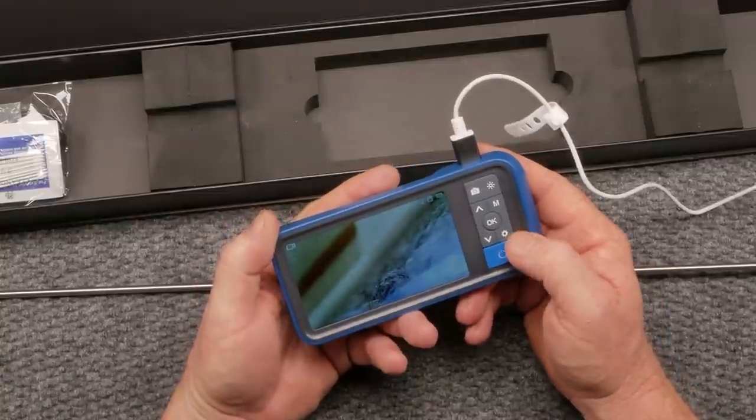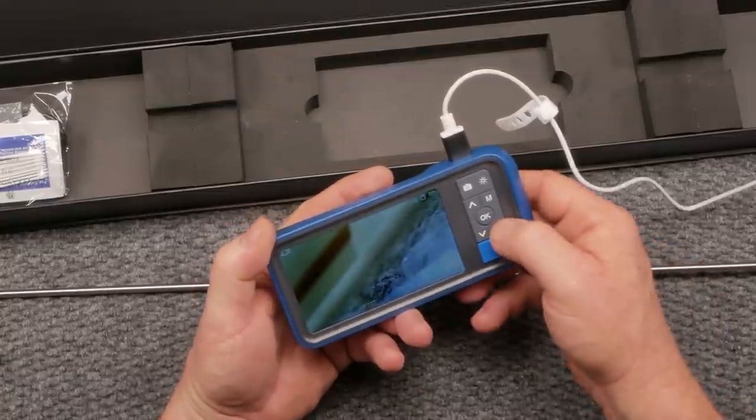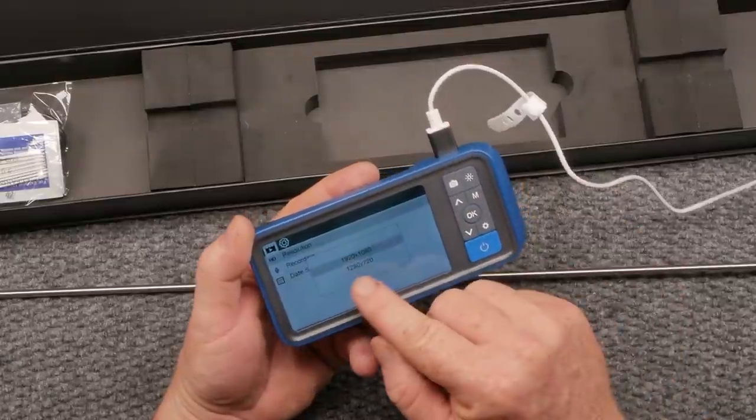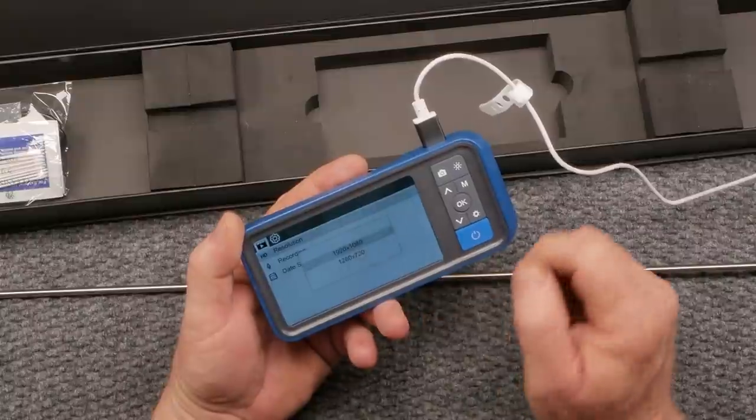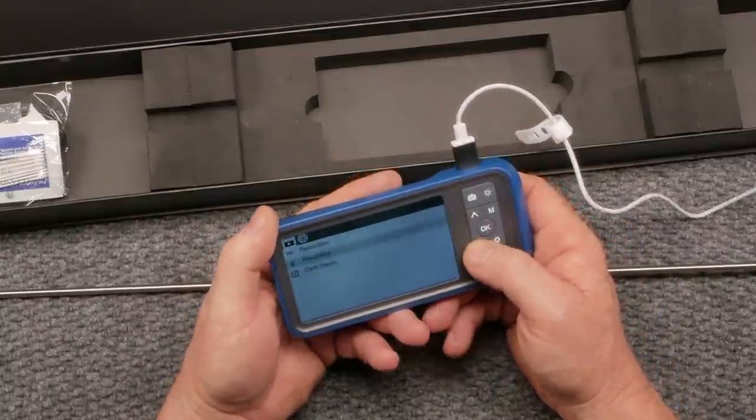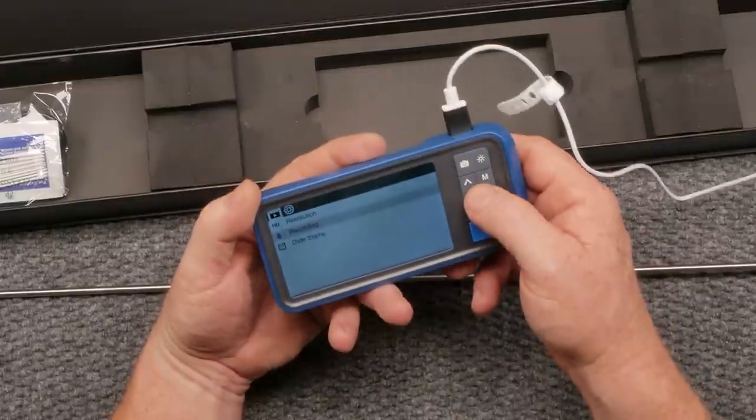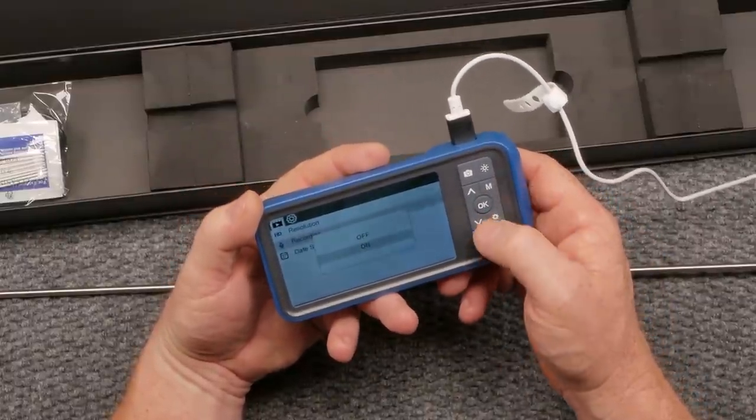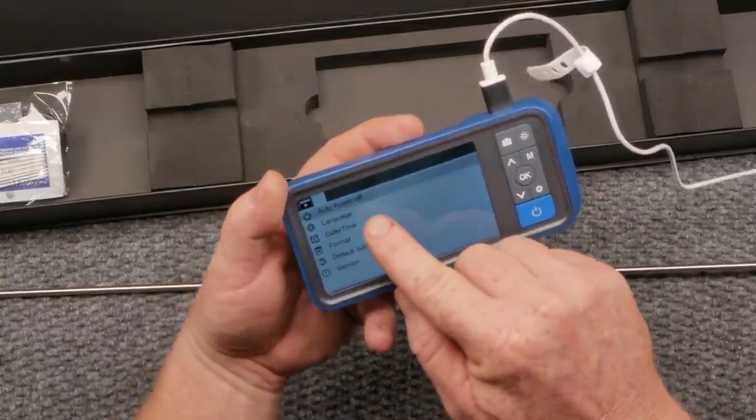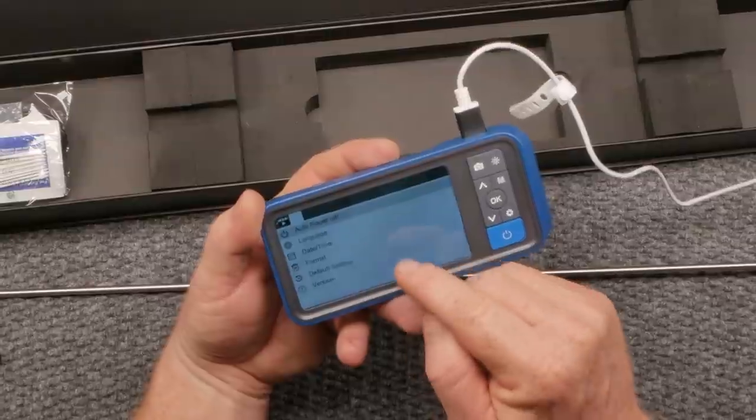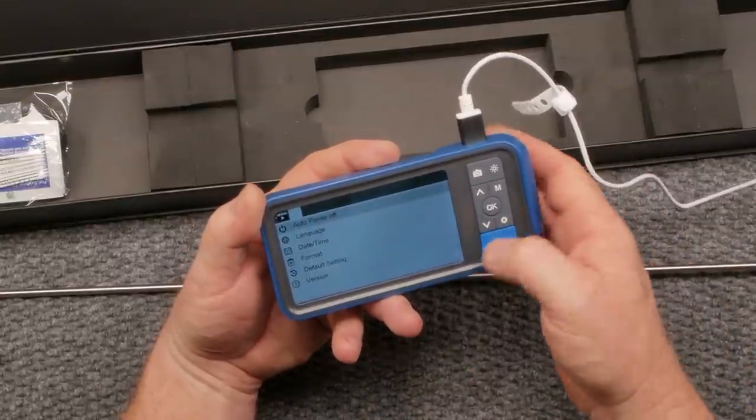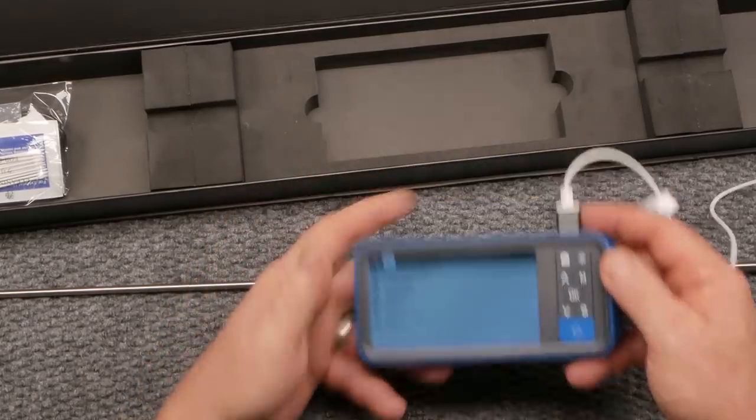Now what we do is we're going to take a look at the controls button right here. You can go different resolutions. We can click on that. You can go 1920 by 1080 or 1280 by 720. We're going to keep it at 1280. We can elect to go ahead and do the recording sound on or off. We're going to go ahead and leave that on date stamp. You can hit this again. We have auto power off, language, date, time format, default setting and version. That's probably the latest updates. So let's go ahead and get out of that.